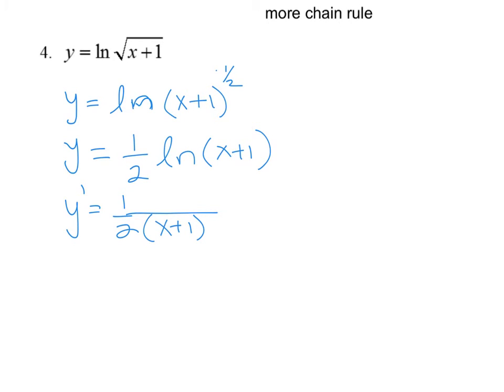I could have done this a harder way. If I did y prime was 1 over x plus 1 square root times 1 half x plus 1 to the negative 1 half, and then I move that down here, I still end up with the same thing.